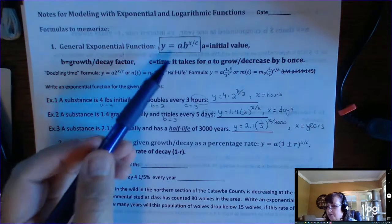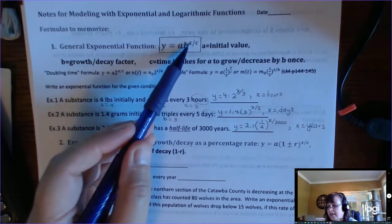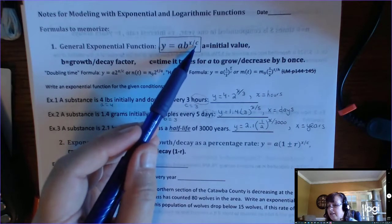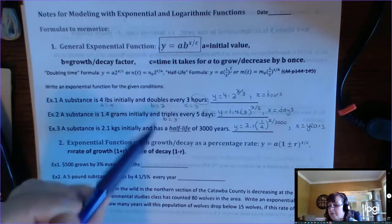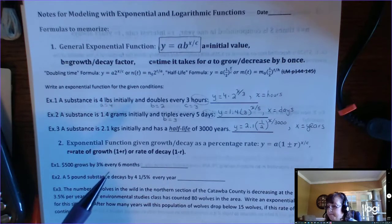So this is the general exponential function. Y equals A, initial value, times B, growth or decay factor, to the X over C, which is the time it takes for us to be able to use that growth factor one time. Now working off of this, we have a new formula.